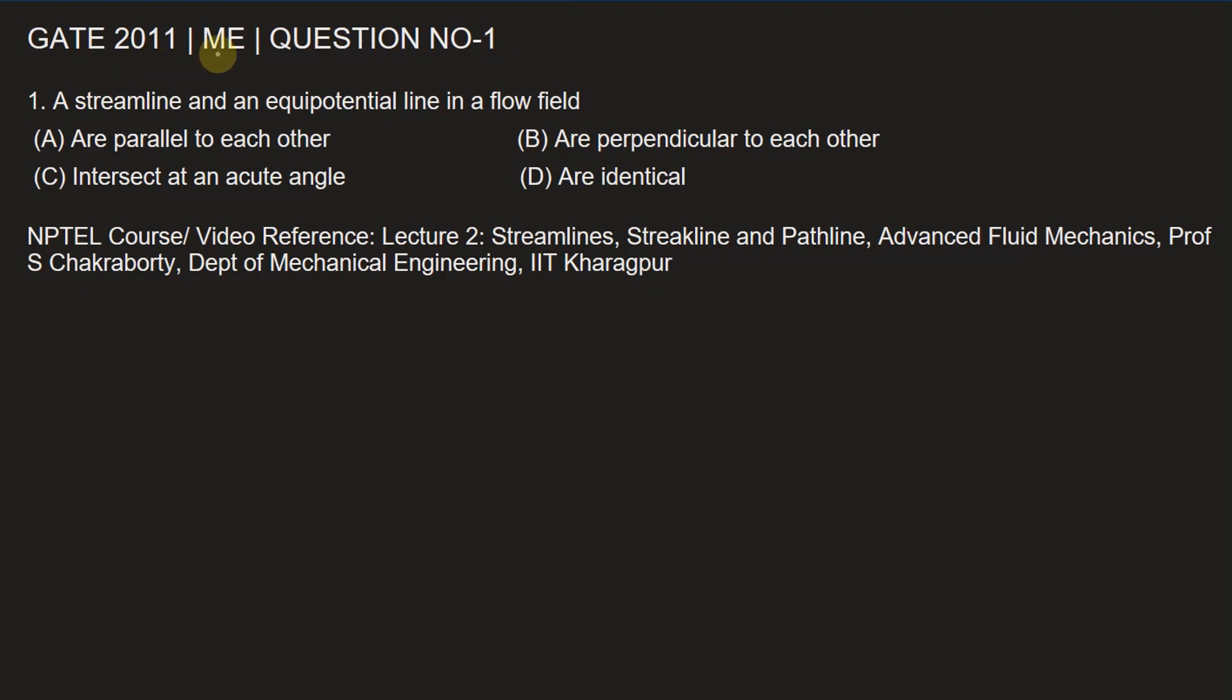This question is from GATE Mechanical Engineering 2011, question number one. A streamline and an equipotential line in a flow field: option A are parallel to each other, option B are perpendicular to each other, option C intersect at an acute angle, and option D are identical.